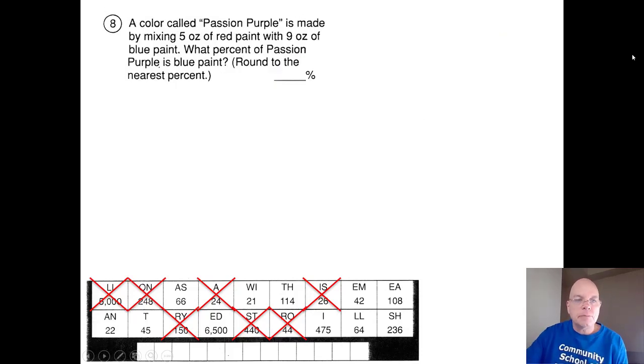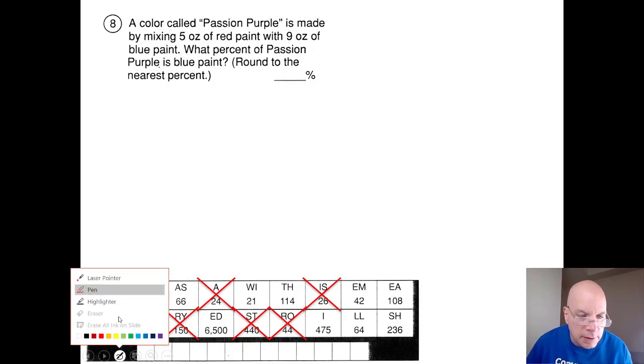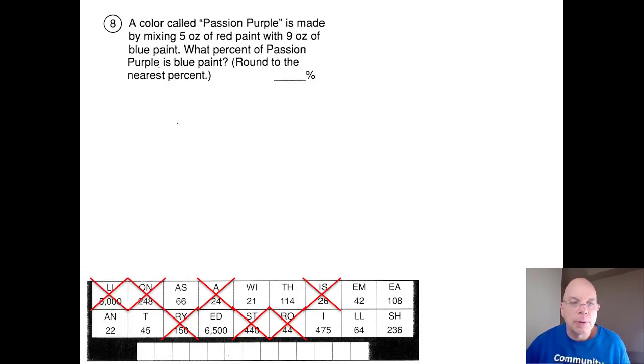Problem number eight. A color called passion purple. Let me change my pen color to purple in honor of passion purple. A color called passion purple is made by mixing five ounces of red paint with nine ounces of blue paint.